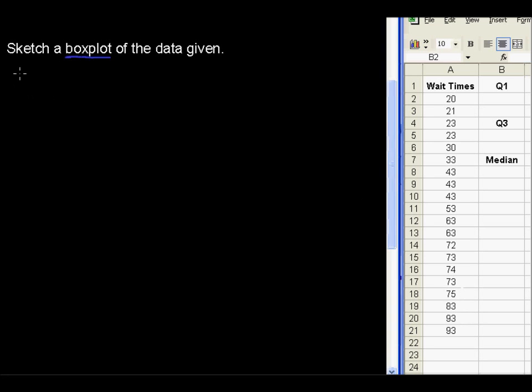A boxplot consists of at least five numbers. It's got the low number, the first quartile denoted Q1, the median of the data, the third quartile, and the highest number.